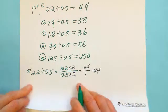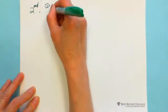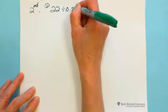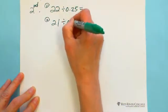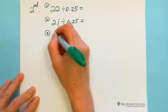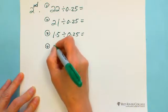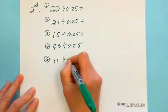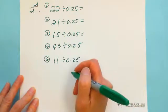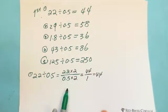The second trick: I'll show you. Numbers like 1 divided by 0.25, or 1.5 divided by 0.25, or 43 divided by 0.25, or even 11 divided by 0.25. As we already know divided by 0.5, we can write the fraction and then multiply by 2.